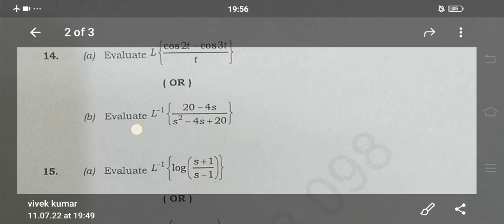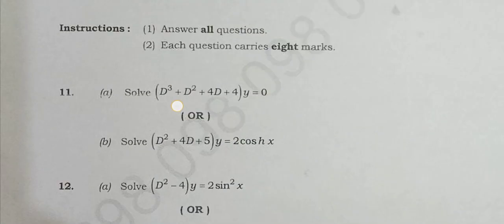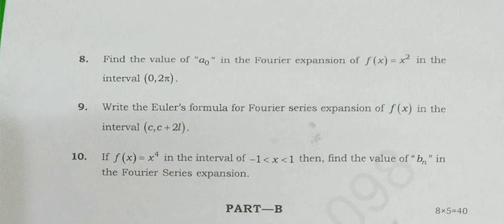Next, choose the 8th and 9th questions. I already have a 4-year series short answer question. The direct 9th question: write the Euler's formula for Fourier series expansion of f(x) in the interval (c, c+2l). Find the value of a₀ in the Fourier series expansion of f(x) = x² in the interval (0, 2π). And if f(x) = x⁴ in the interval (−1, 1), find the value of bₙ in the Fourier series expansion. You can see these three questions in the short videos.